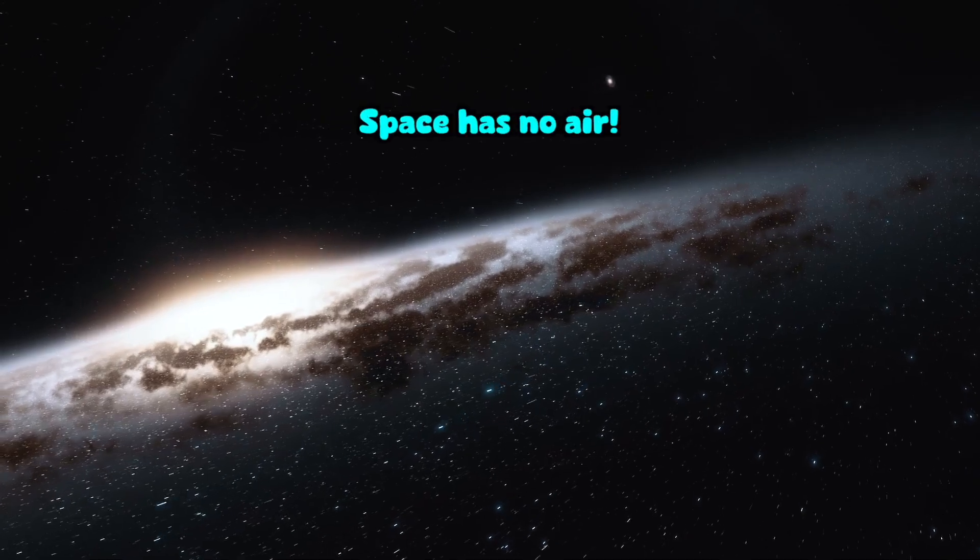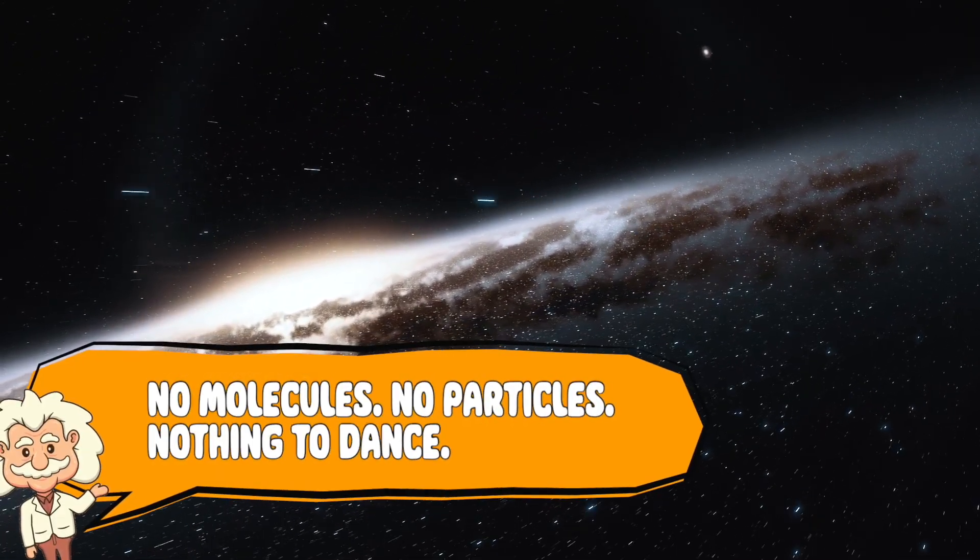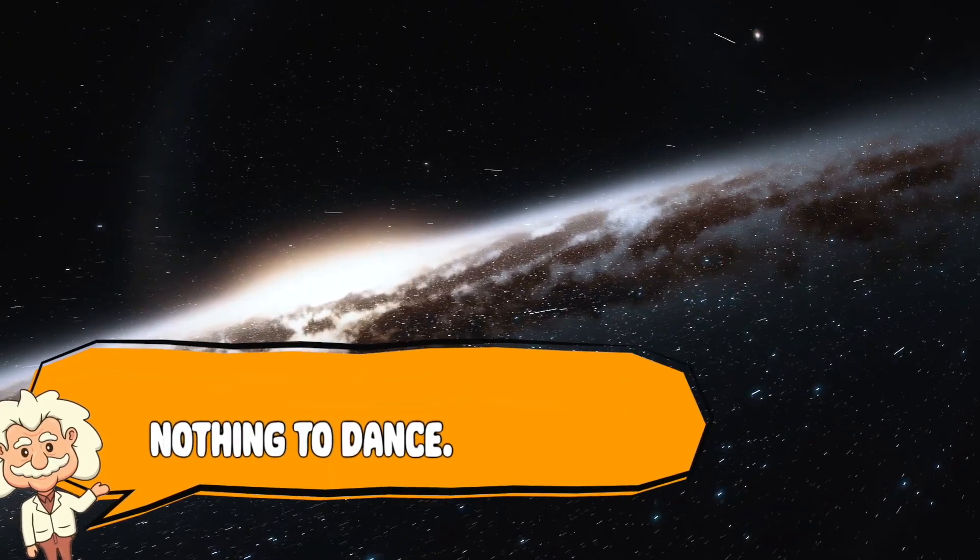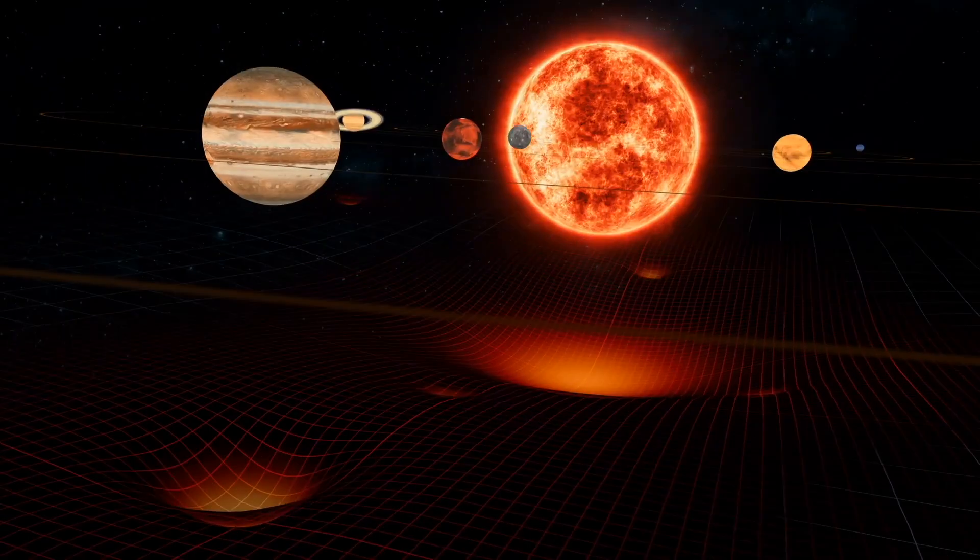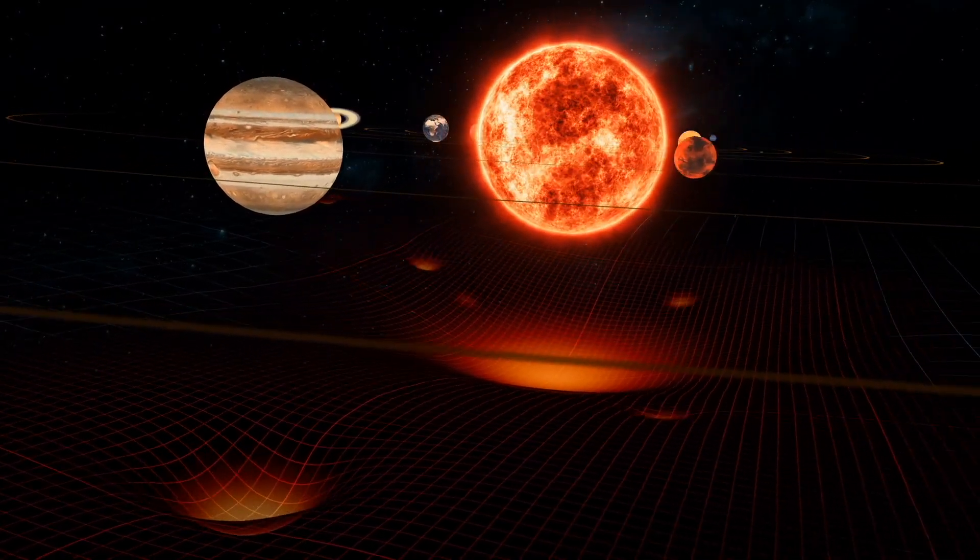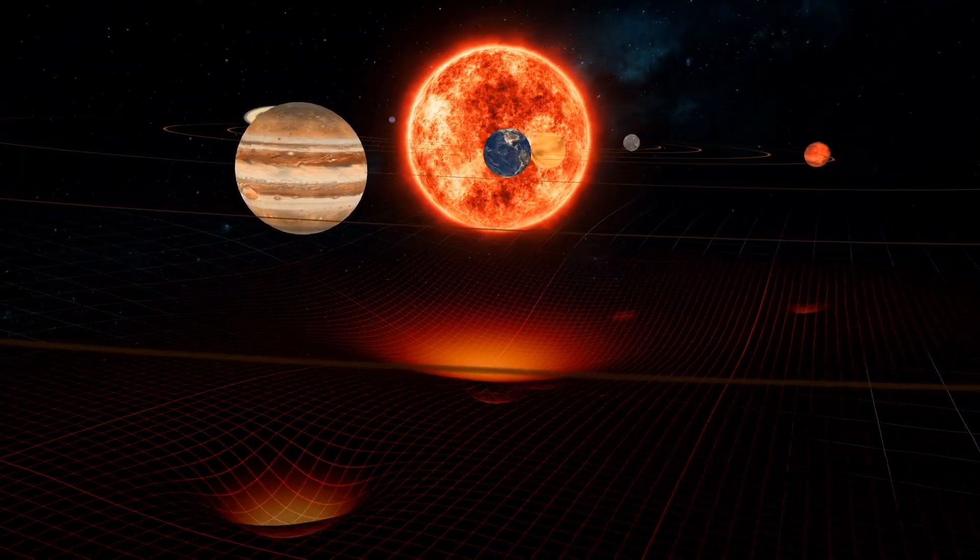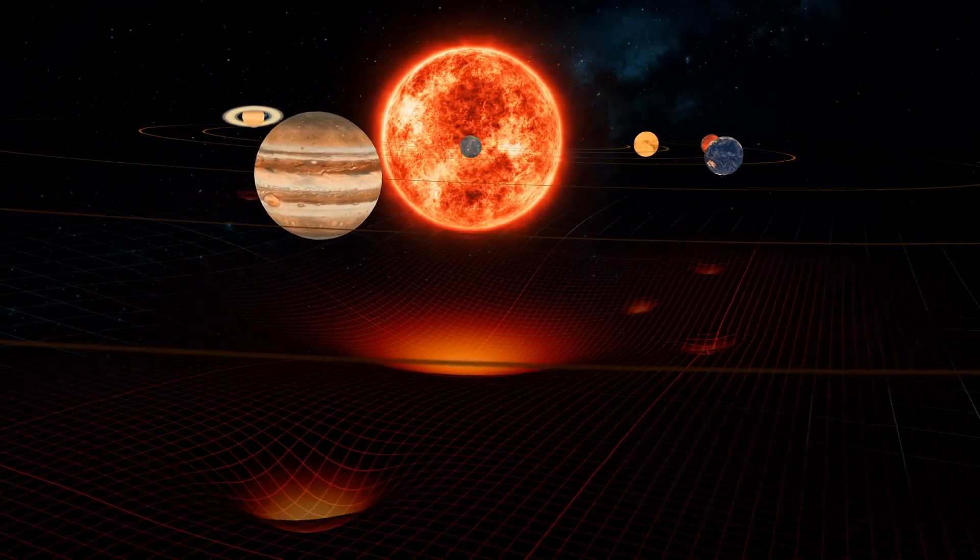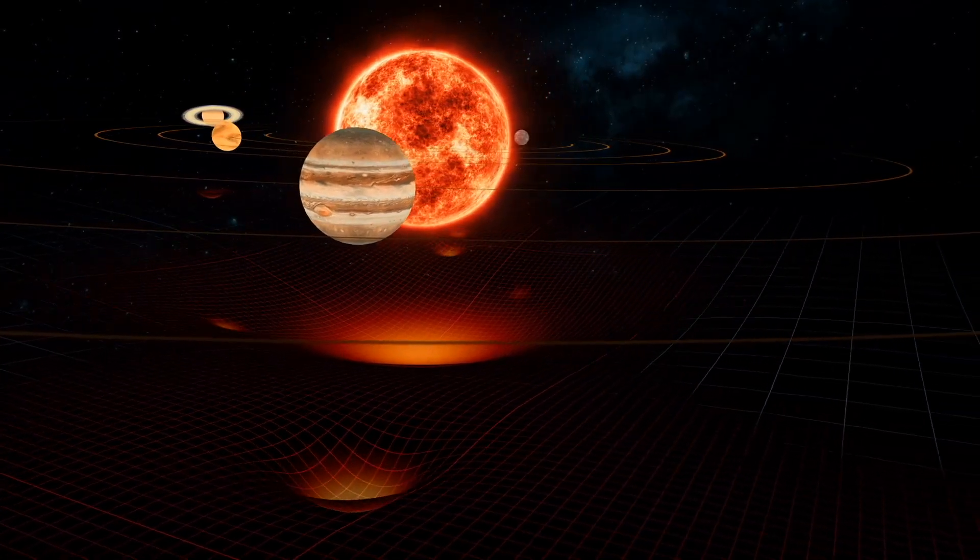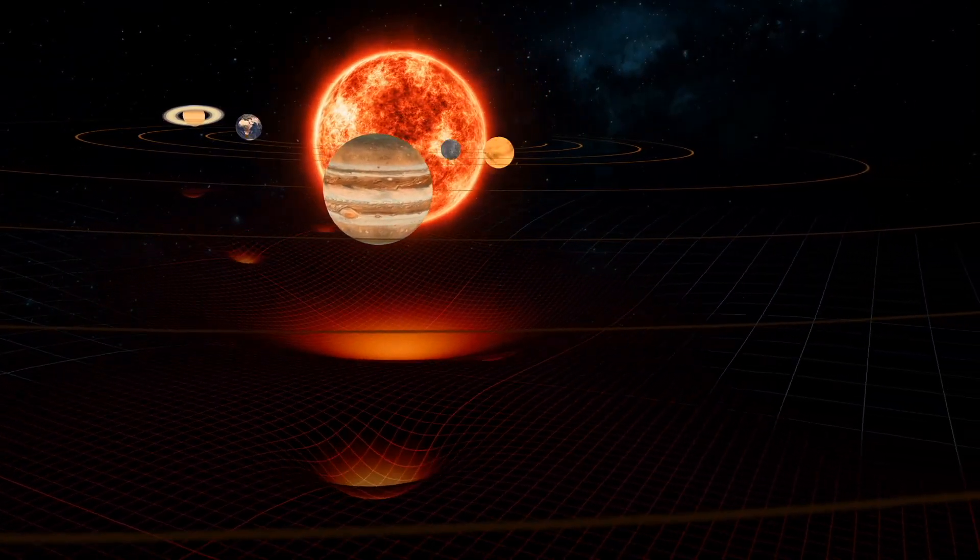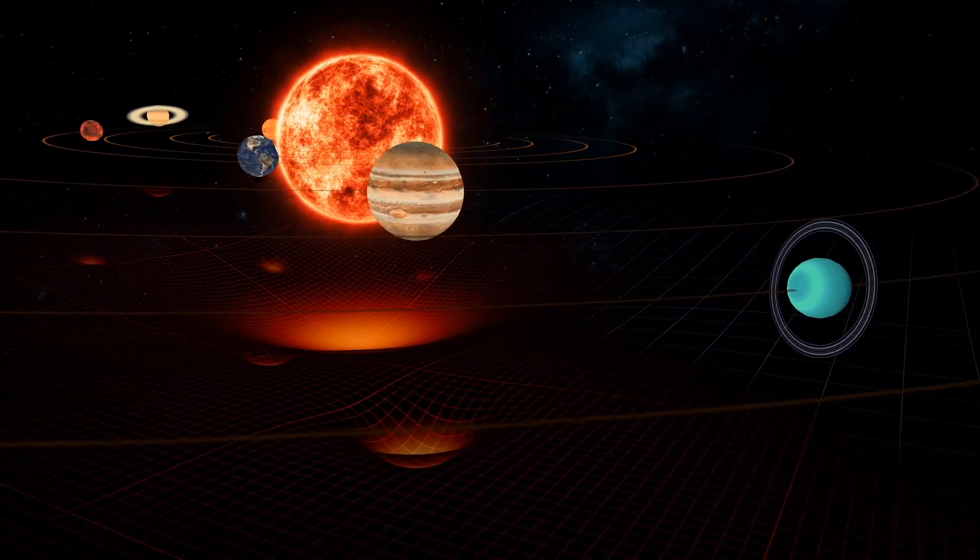But space? Space has no air. No molecules. No particles. Nothing to dance. It's basically the worst party venue ever. So even though sunlight still travels through space, there's nothing there to absorb it and turn it into heat. That's like standing in front of an oven. But instead of warm air blowing at you, it's just light, silently passing by like, good luck out there, buddy.